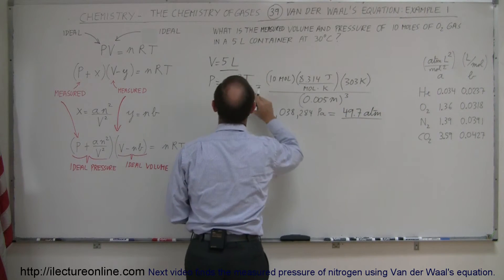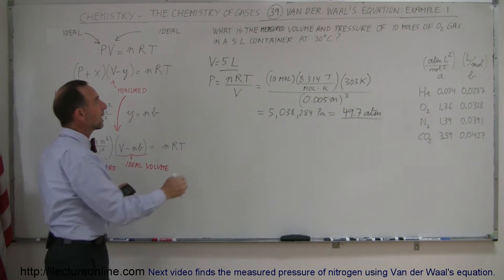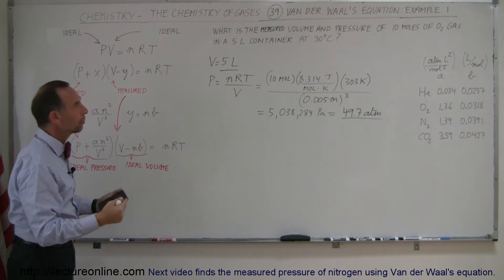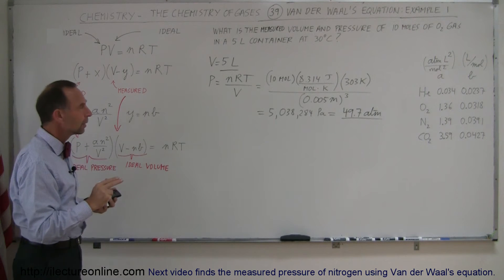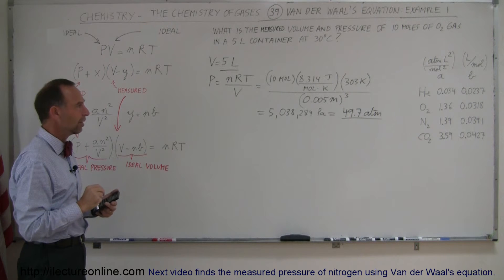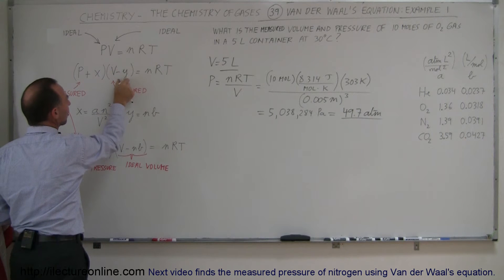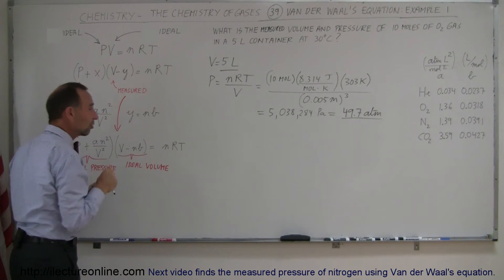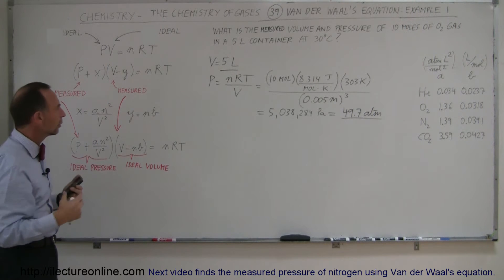That is the ideal pressure and volume — we take the volume of the container and the pressure we get from the temperature, number of moles, and volume. In reality, though, the real volume associated with the gas will not be the volume of the container, because the molecules take up some space themselves. And the pressure will be adjusted because there are intermolecular forces due to unequally distributed charges.